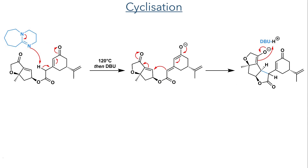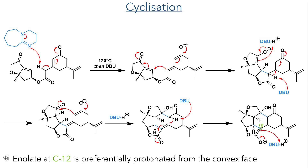With this ester now formed, the molecule underwent a rather remarkable cyclisation. It was first heated to 120 degrees, and then DBU was added. It is proposed that this first deprotonates the molecule at the position alpha to the ester, forming a conjugated enolate that then undergoes an intramolecular Michael addition, forming a 5-membered lactone ring. Deprotonation of this alpha position once again forms an enolate, which this time directly attacks the carbonyl centre to form a 6-membered ring.